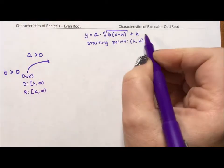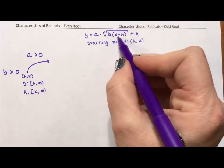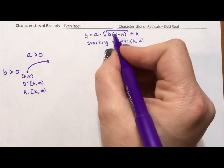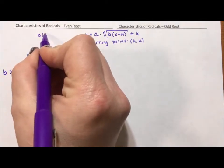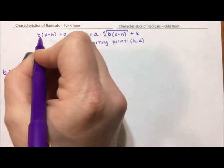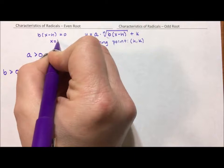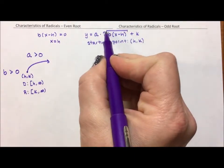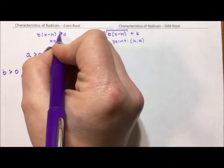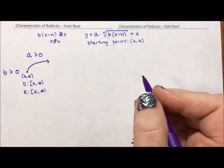Now k is simple to pull out because it's always the bit that's outside of the radical. For the h, what we really do is we set this b times x minus h equal to zero because the b is a number. We don't have to worry about that. Basically, x has to equal h. So really what we're doing is we're setting whatever's under that even radical equal to zero or greater than or equal to zero to get our domain.